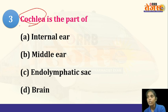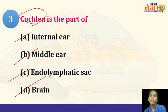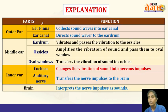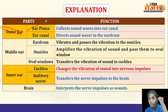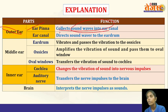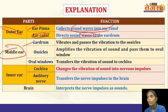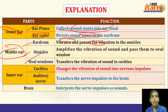Next question: cochlea is part of which structure — internal ear, middle ear, endolymphatic sac, or brain? The cochlea is present in the internal ear. The parts of the ear are divided into three: outer ear, middle ear, and inner ear. The outer ear has the ear pinna (cartilage/auricle), which collects sound waves into the ear canal. The ear canal directs sound waves to the middle ear, eardrum, and middle ear consists of the eardrum, ear ossicles, oval window, and round window.